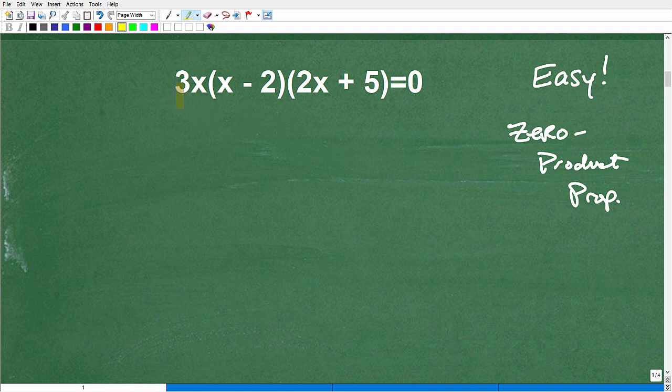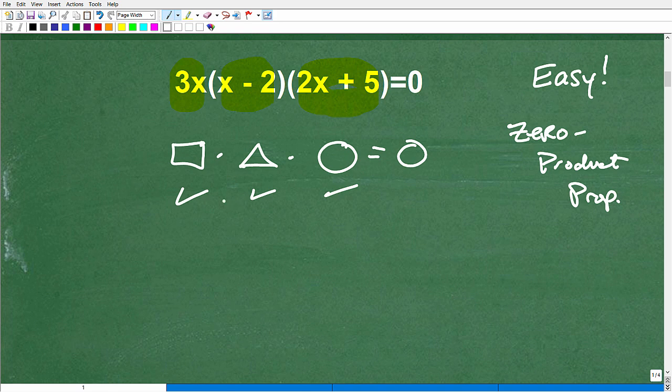We have these things being multiplied together. We have a 3x, and we're multiplying it by an x minus 2, and we're multiplying it by this thing, by 2x plus 5. So think of it. I have three things. I have this times this times this, and I'm drawing these little figures here. It's equal to zero. These things represent numbers or values. So if I told you I have three different things, three different numbers or values. I multiply them all together, and my answer is zero. What does that tell us about one or all of these things?